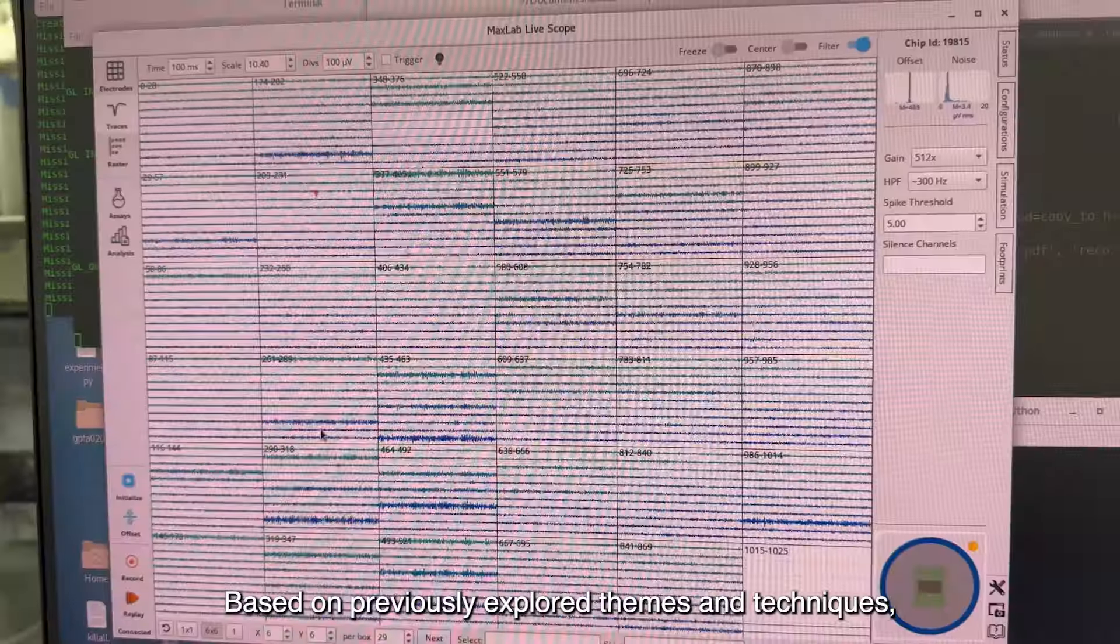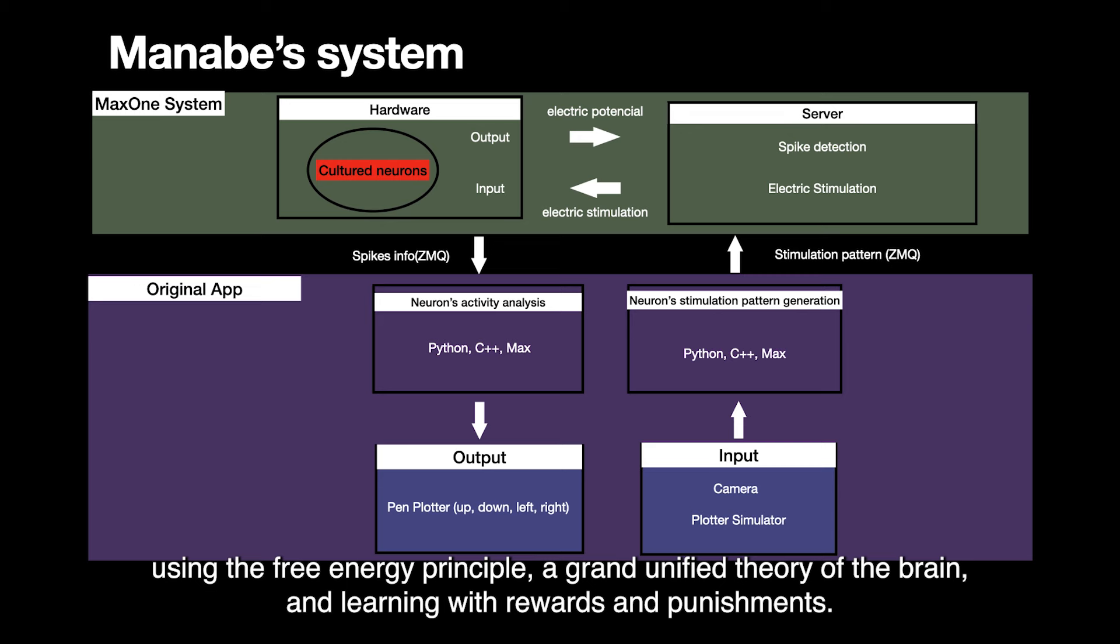The aim is for the neurons to learn and actively generate drawings on their own, using the free energy principle, a grand unified theory of the brain, and learning with rewards and punishments.